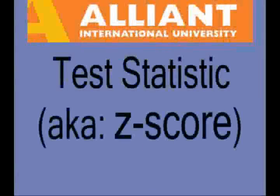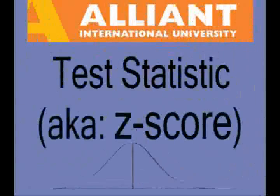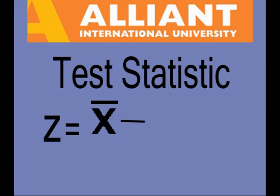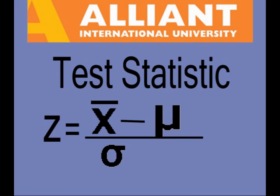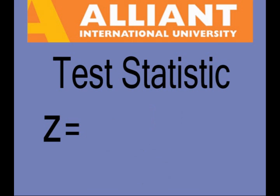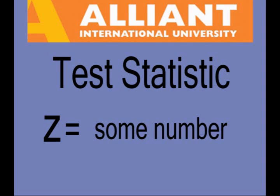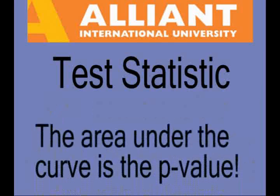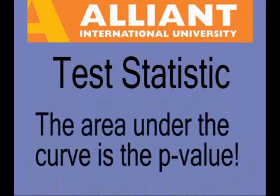The test statistic, also known as your z-score. Z equals the sample mean minus the population mean, divided by the standard deviation, divided by the square root of the sample size. You're going to get some number, but that is not the probability number. That number refers to an area underneath the distribution curve. The area underneath the curve is your p-value.